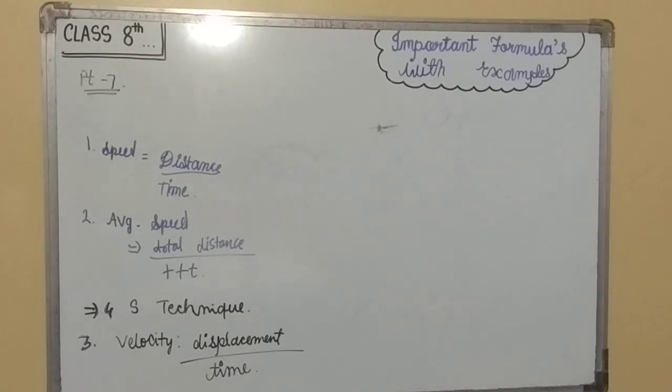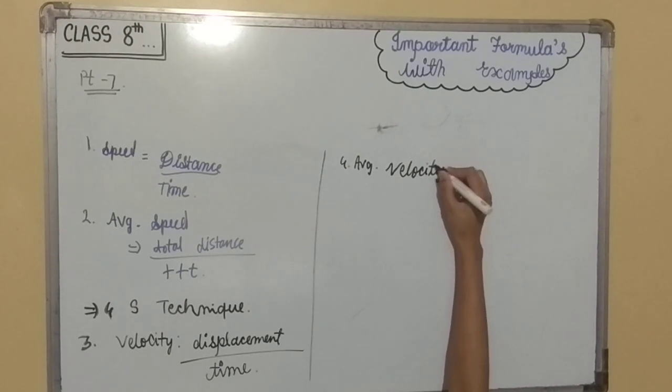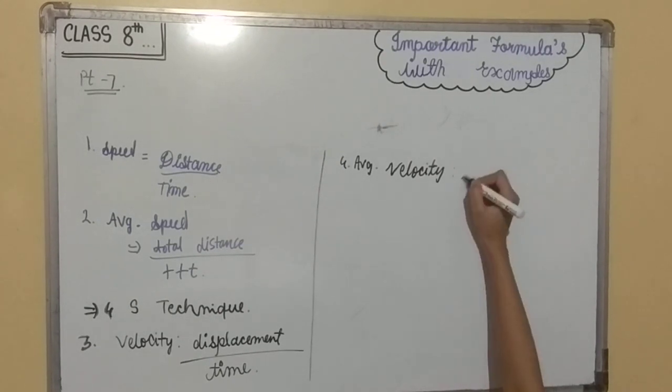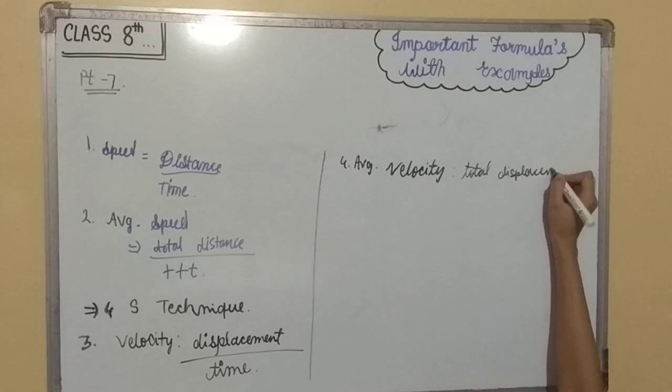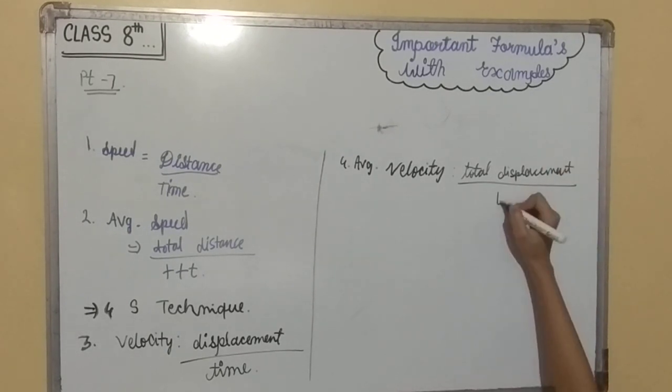Then it comes the average velocity. Average velocity is total displacement upon total time taken. It is a vector quantity.